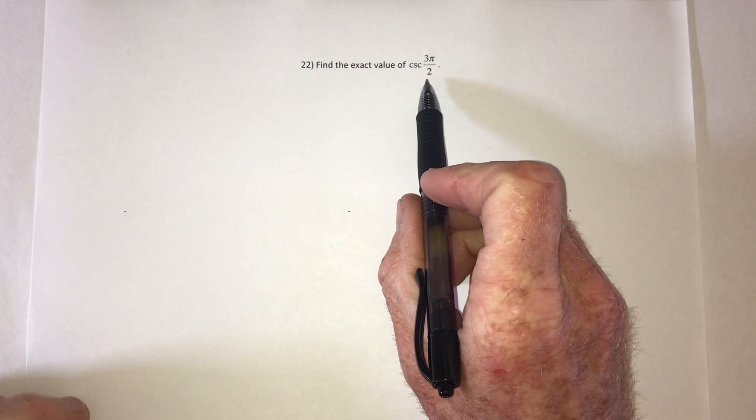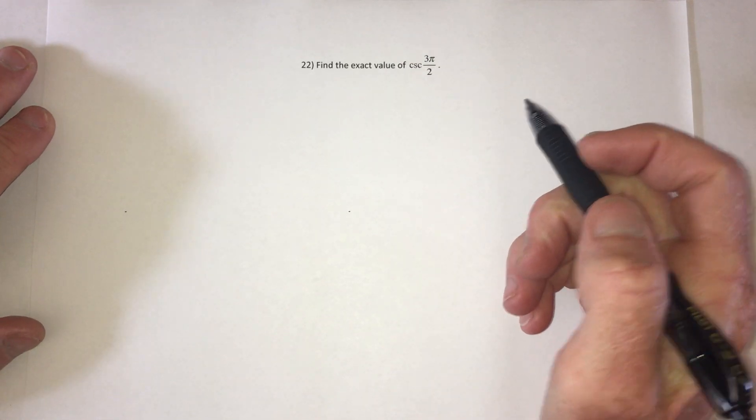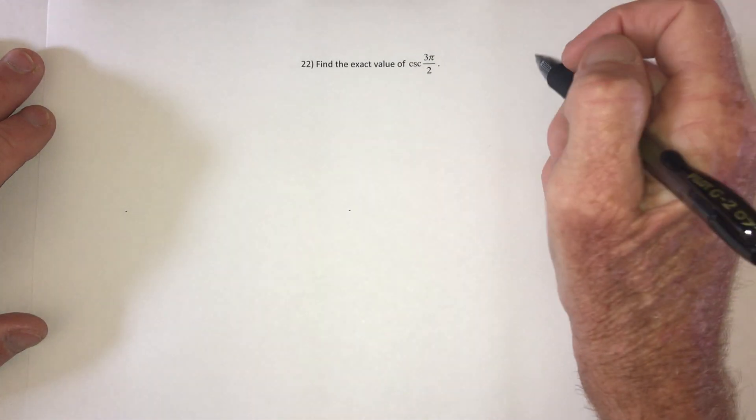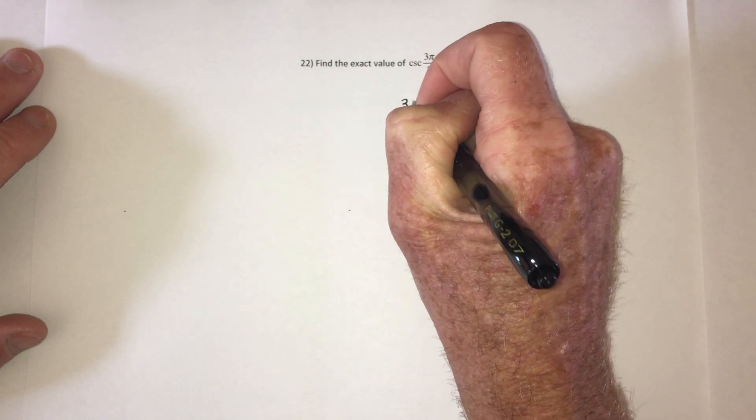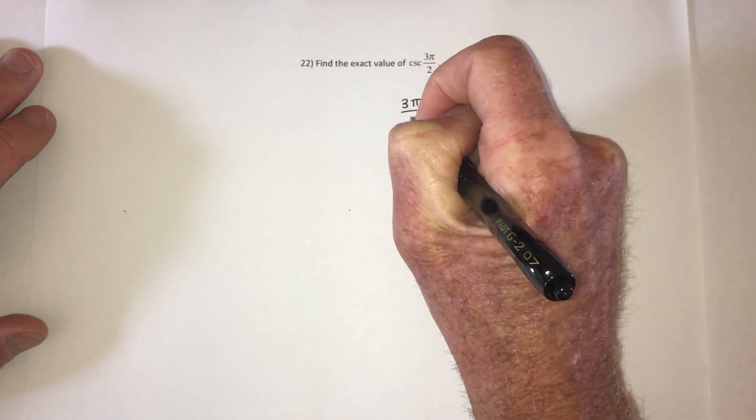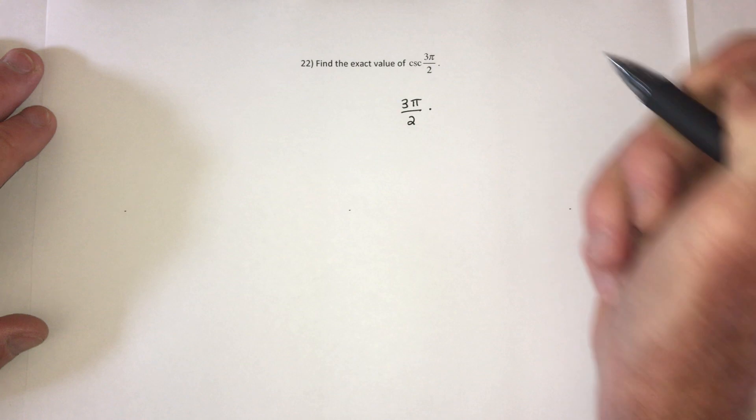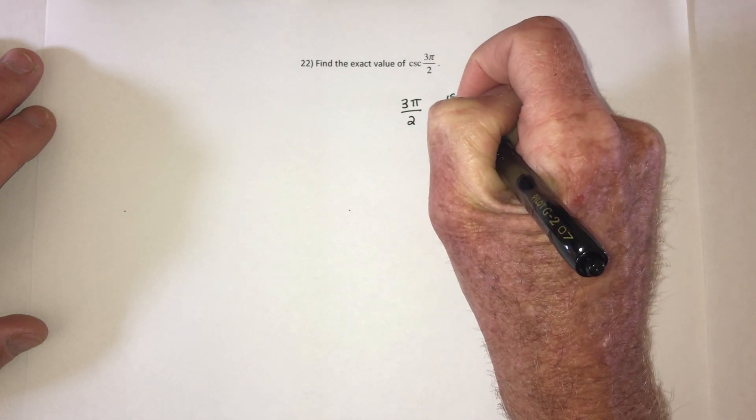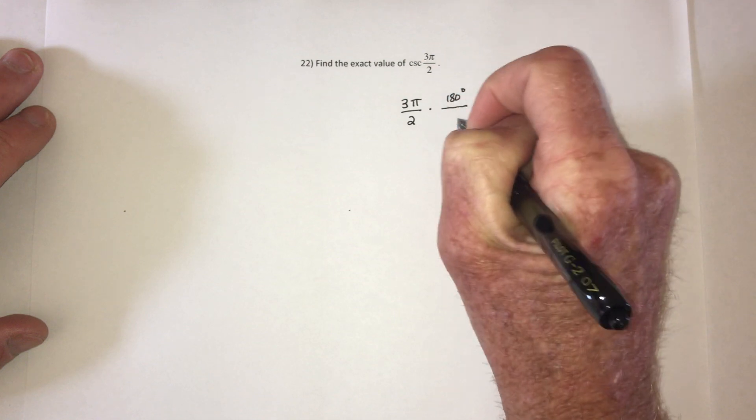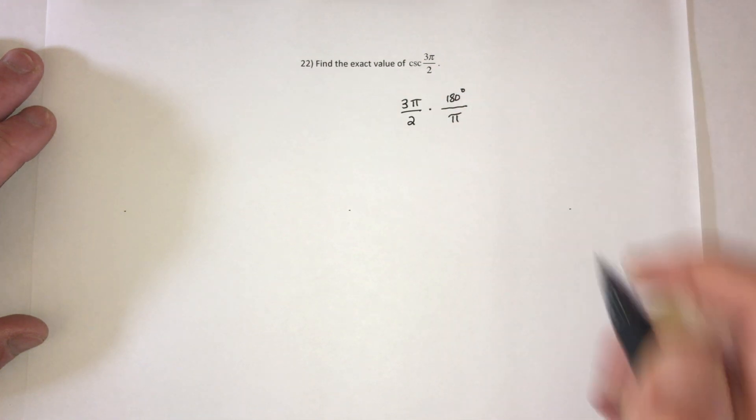And now we're finally using radians. So there's two ways to measure angles: degrees and radians. When you have an angle in radians like 3π/2 and you want to change it to degrees, then multiply by the conversion factor 180 degrees over π.